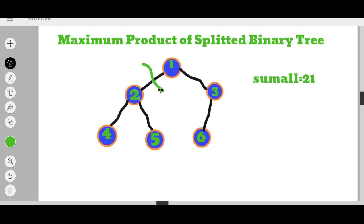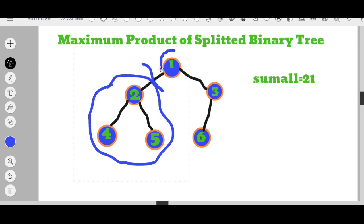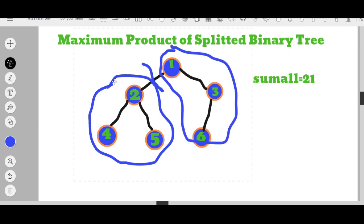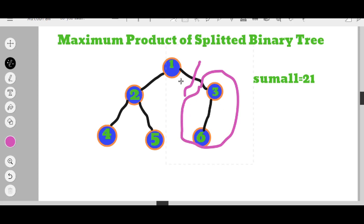If we want to split the tree on a given edge, we need the sum of each of the two subtrees. But if we know the sum of one subtree, we don't have to calculate the sum of the other subtree - because we know sum_all, so we just subtract this sum from sum_all and we get the other sum.